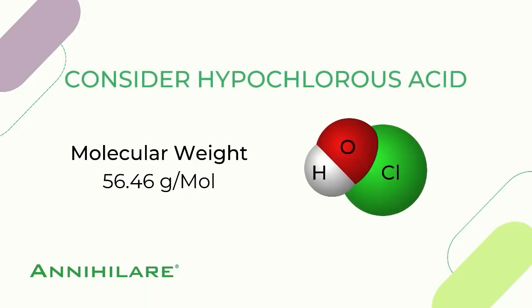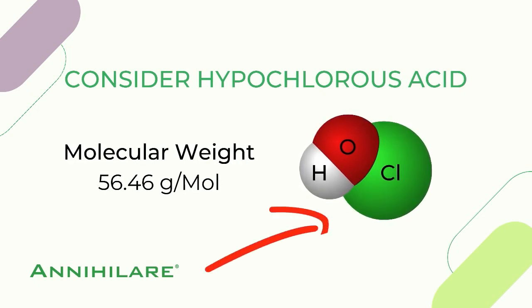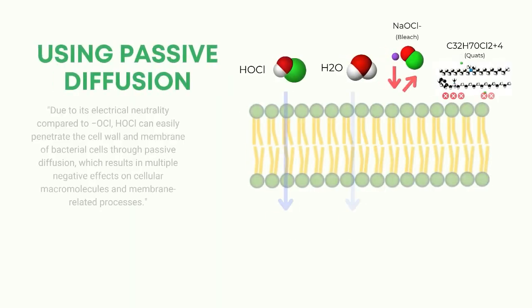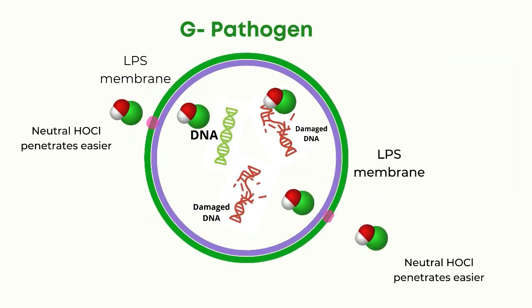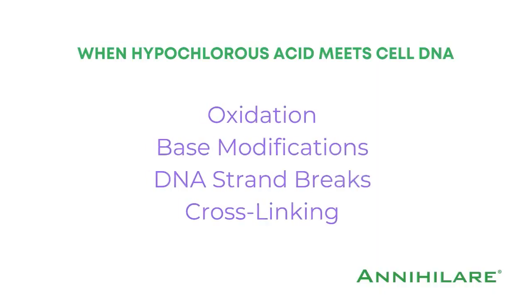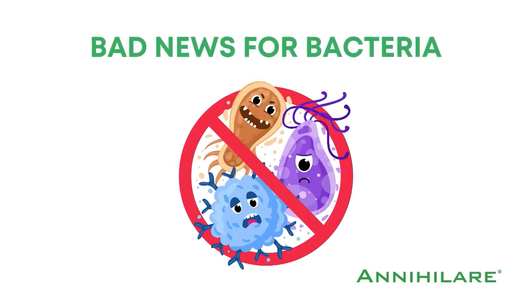Well, let's consider our pal hypochlorous acid. Hypochlorous acid is small, and I don't see any plus or minus signs on the HOCl formula — do you? That's actually pretty convenient, because when hypochlorous acid comes in contact with a germ, it just slips right in to wreak all sorts of havoc on the cell's DNA, in the form of things like oxidation, DNA base modifications, strand breaks, and cross-linking. Those are all fancy terms for bad news bacteria.